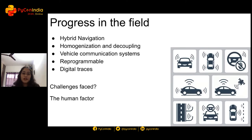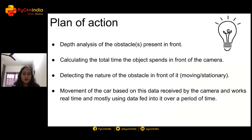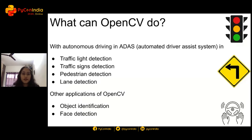Anyway, this is how I built the primary prototype. The plan of action was to find the depth of the obstacle present in front of it, calculate the total time the object spends in front of the camera, detect the nature of the obstacle — whether it's a moving or stationary object — and determine the movement of the car based on this data received by the computer, working in real time and using data fed into it over a period of time. The solution here is to basically use OpenCV.